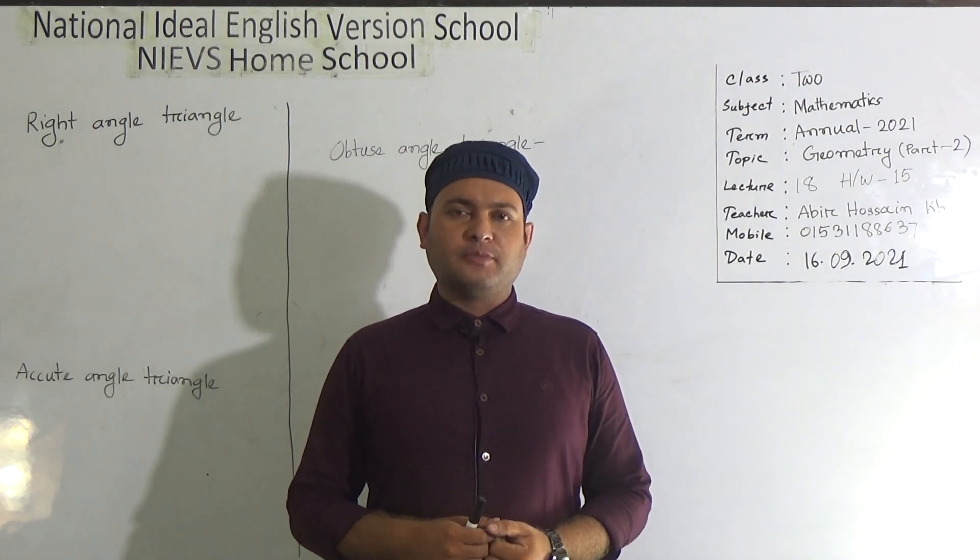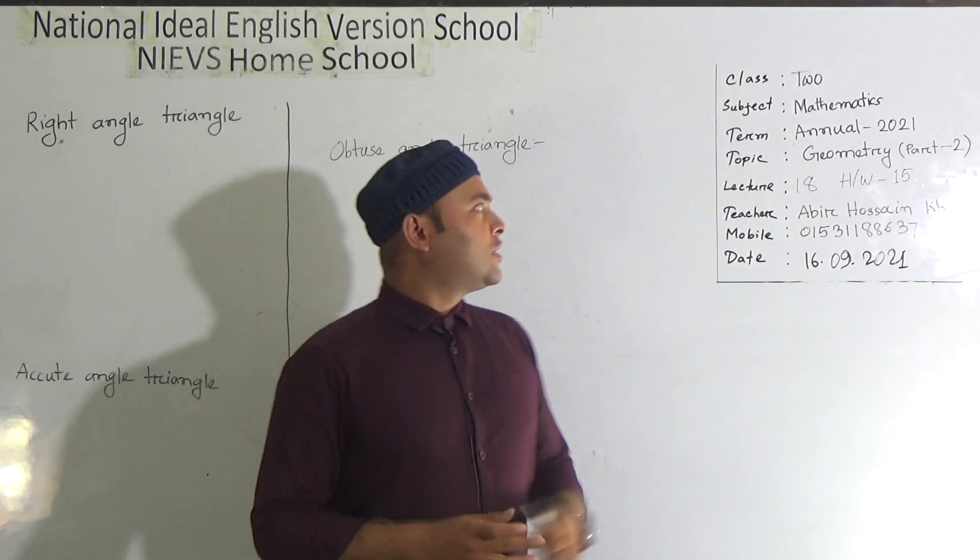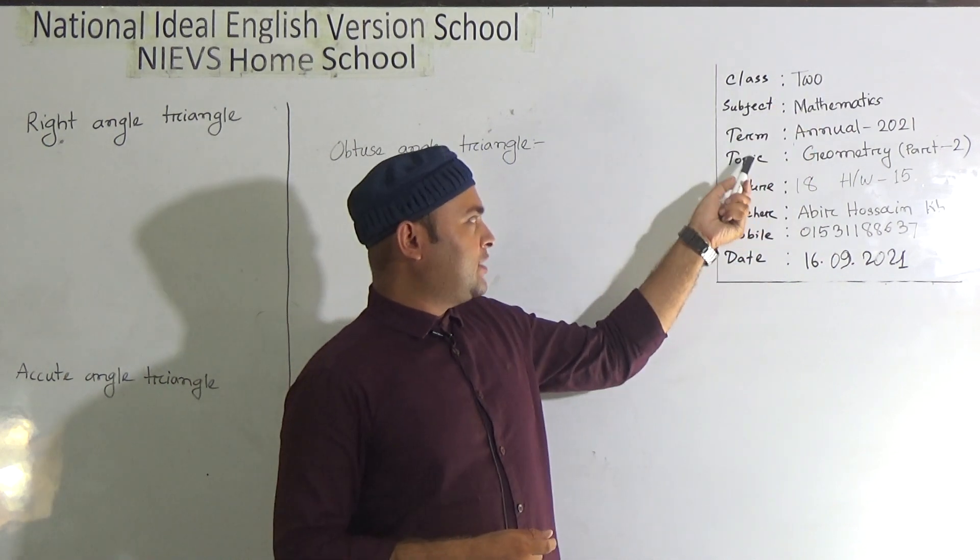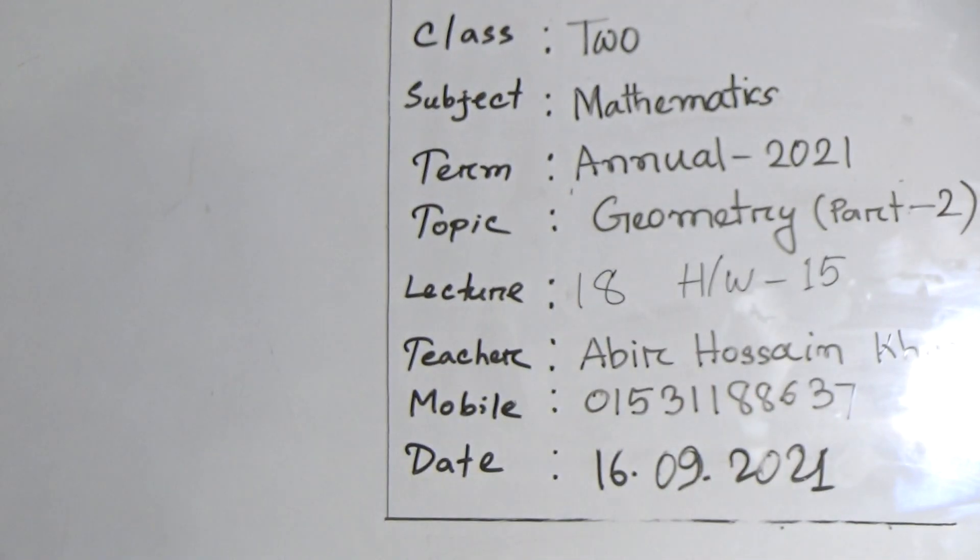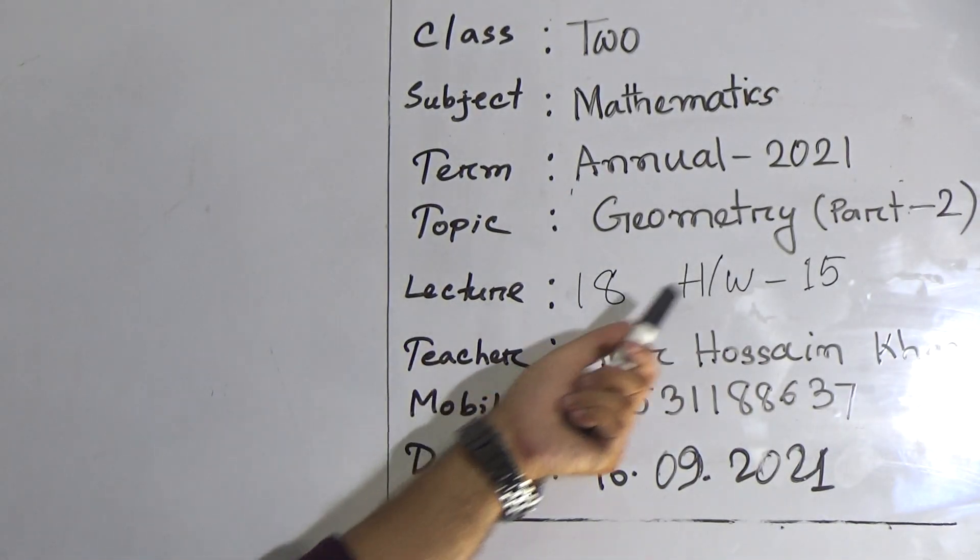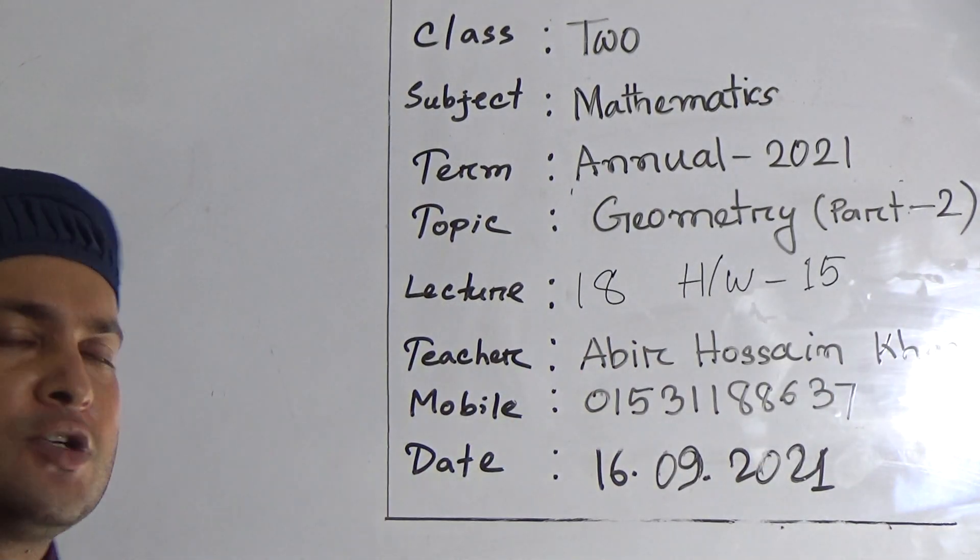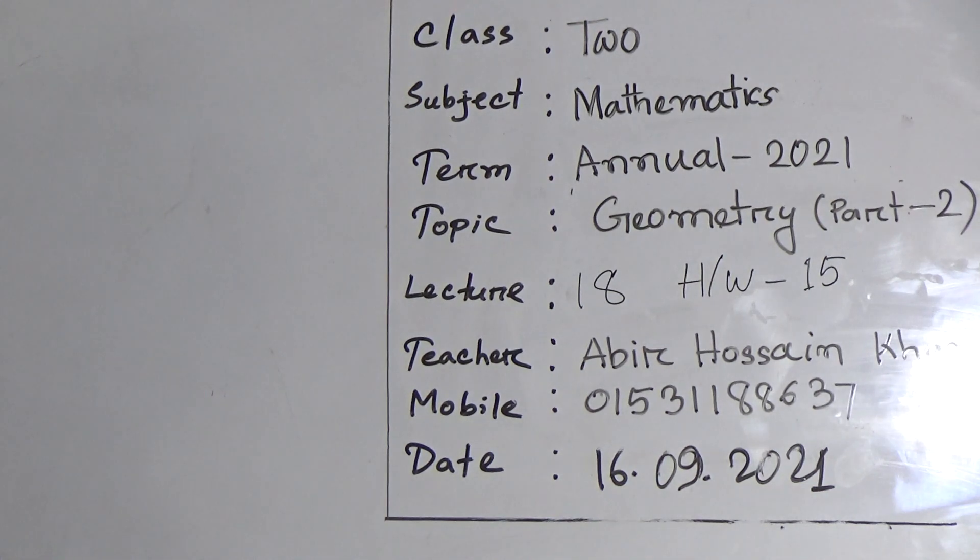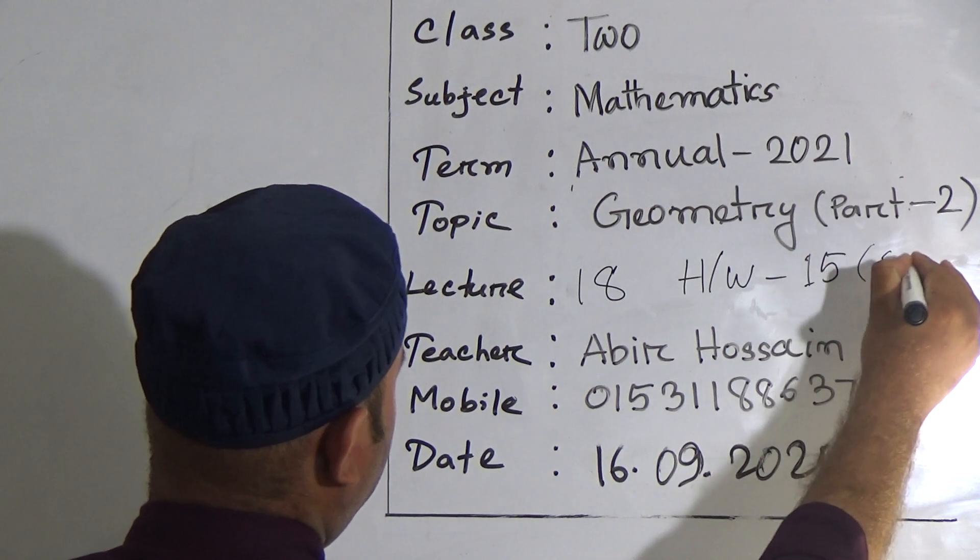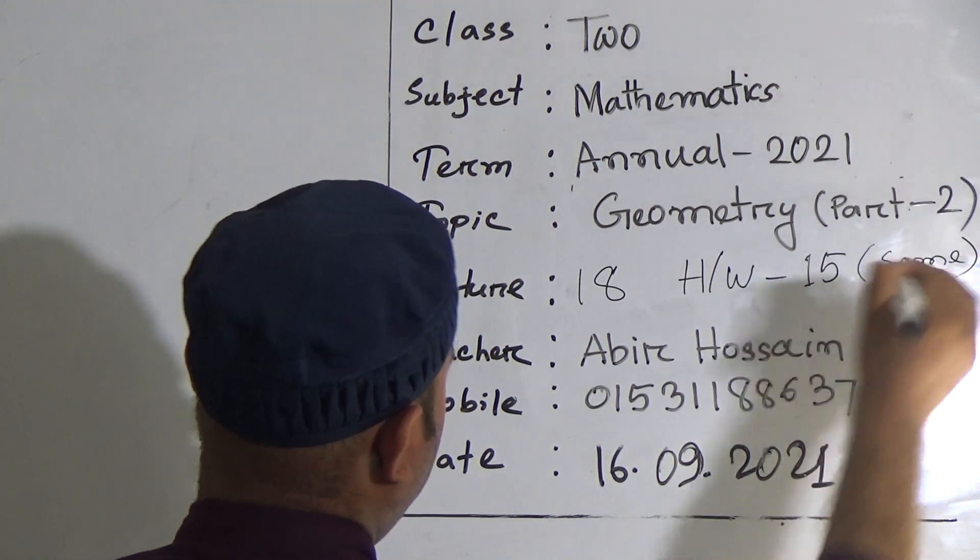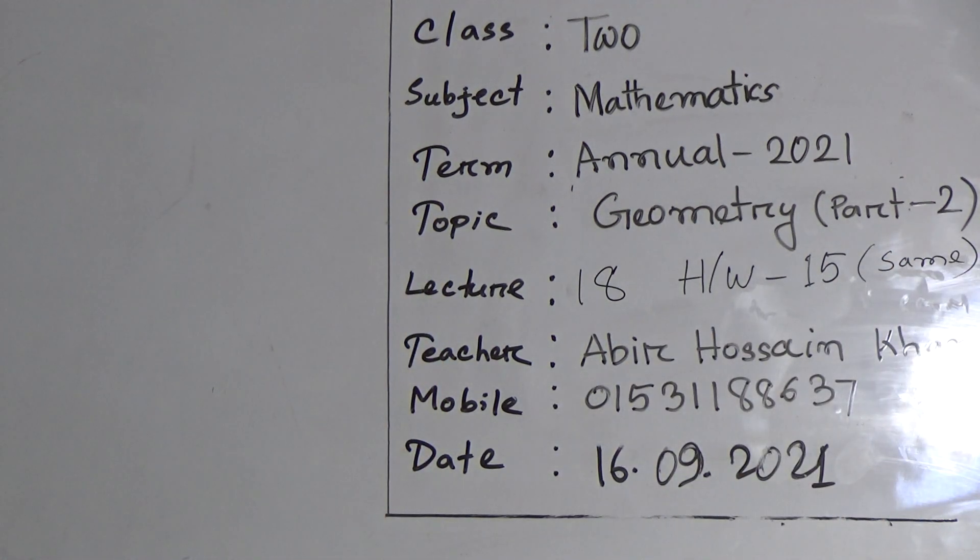Today I'm going to take mathematics class for Class 2. Today's topic is Geometry Part 2. You have already learned Geometry Part 1. Today's lecture is 18 and homework is 15. You have to submit your homework on your campus, and your homework is the same as this class. Now my dear students, let's go to the rest of class.